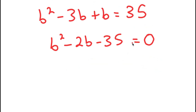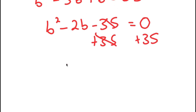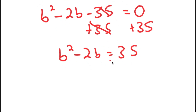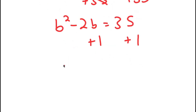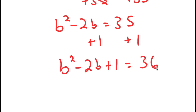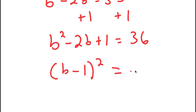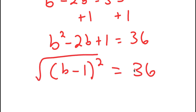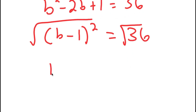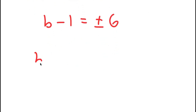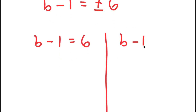Instead of factoring, I'll complete the square. Starting from B squared minus 2B equals 35, I add 1 to both sides to get B squared minus 2B plus 1 equals 36. This factors as B minus 1 squared equals 36. Taking the square root of both sides gives B minus 1 is equal to positive or negative 6, which produces two equations: B minus 1 equals 6, and B minus 1 equals negative 6.